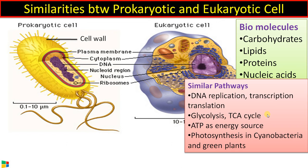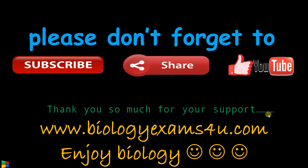In the case of plant cells and cyanobacteria or blue-green algae, there are many similarities in photosynthesis as well. Even though there are many differences between prokaryotic and eukaryotic cells, the basic composition and mechanisms that manifest life are the same. Thank you so much for your support — you are with biology exams4u.com.